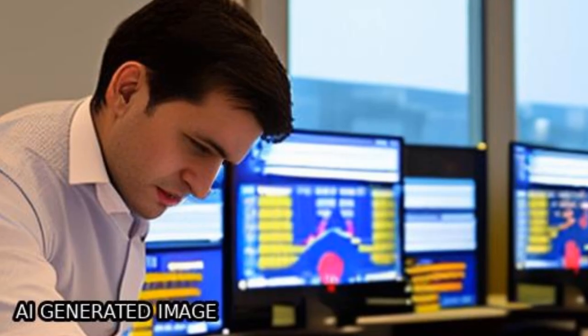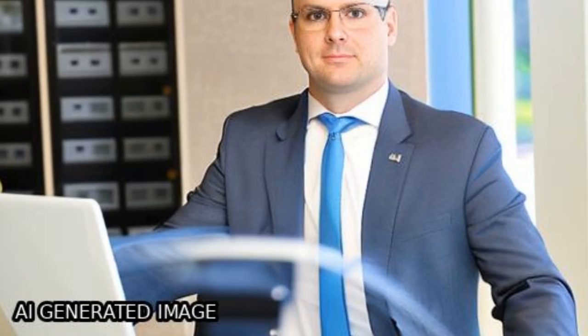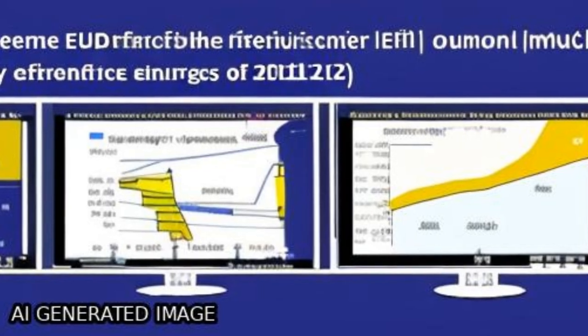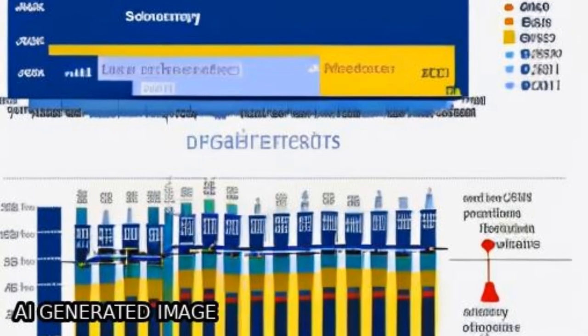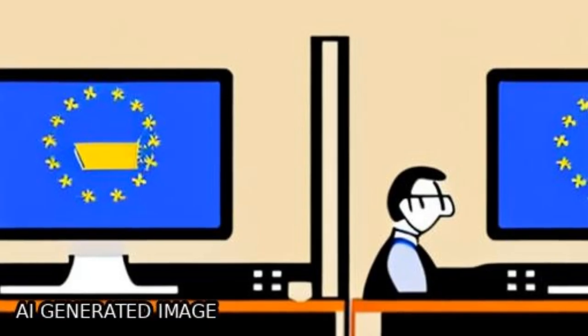The study applies the panel-corrected standard errors technique to check the effect of digital business on energy efficiency for the EU countries in 2011-2020 and finds that increased digital business leads to decreased energy intensity, implying a significant negative effect on energy consumption.